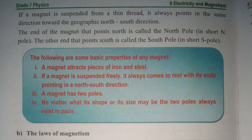The following are some basic properties of any magnet: A magnet attracts pieces of iron and steel. If a magnet is suspended freely, it always comes to rest with its poles pointing in the north-south direction. A magnet has two poles, and no matter what its shape or size, the two poles always exist in pairs.